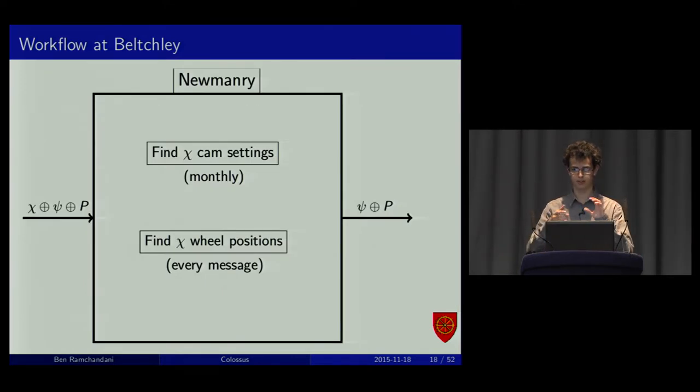We'll focus on the Newmanry. You have to find first the cam settings. They were generally changed monthly. It's a bit of a bane to go through every single little switch. The wheel position is much easier to change. They're changed for every message, or supposed to be. So, we're mostly going to assume we have the cam settings. Colossus was actually used to find them later on. Initially, they just worked from depth. The main problem was finding the chi settings for each message.